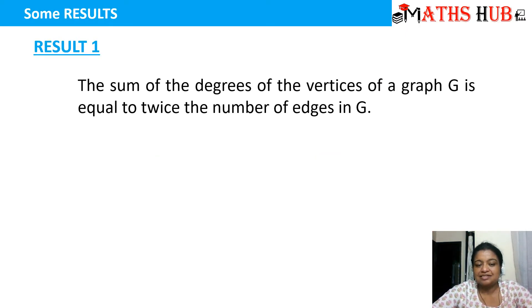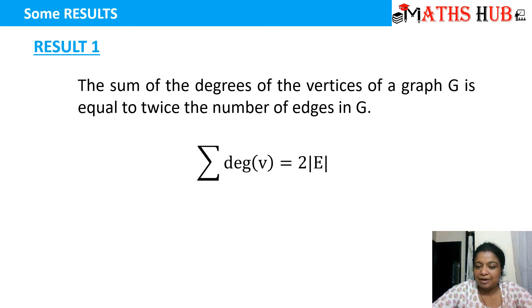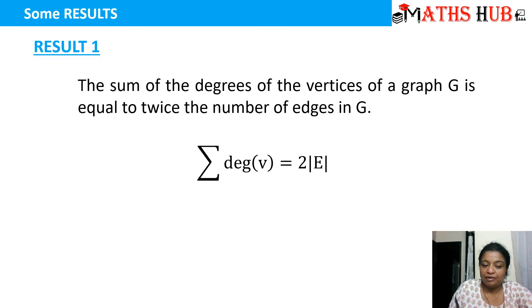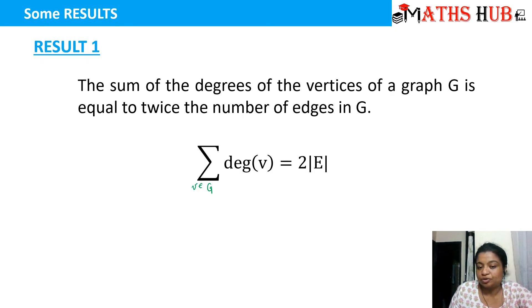The first result says the sum of the degrees of the vertices of a graph G is equal to twice the number of edges. In mathematical language, the summation of the degree of all vertices in a graph — where V belongs to G — is equal to two times the number of edges.